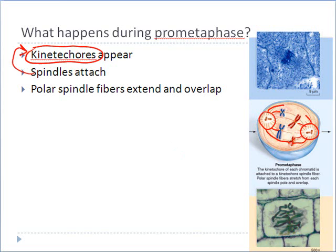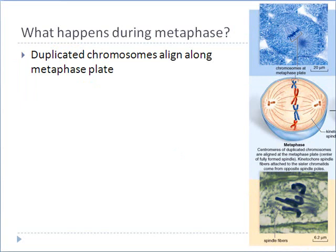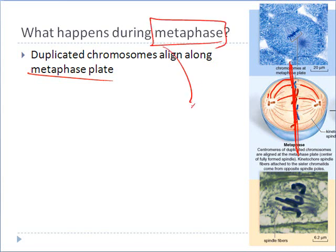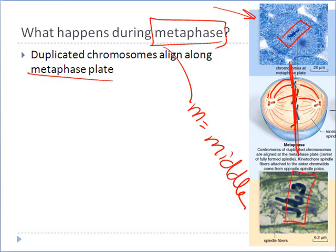Next, a tug of war occurs between the mitotic spindle fibers from each centriole, doing a push-and-pull routine on each chromosome until all the chromosomes are literally lined up along the equator of the cell — we sometimes call this equator the metaphase plate. When all the duplicated chromosomes are lined up along the middle of the cell, we are in metaphase. Think: M in metaphase equals middle. You can see this in a picture of an animal cell, and here's the same example in a plant cell.